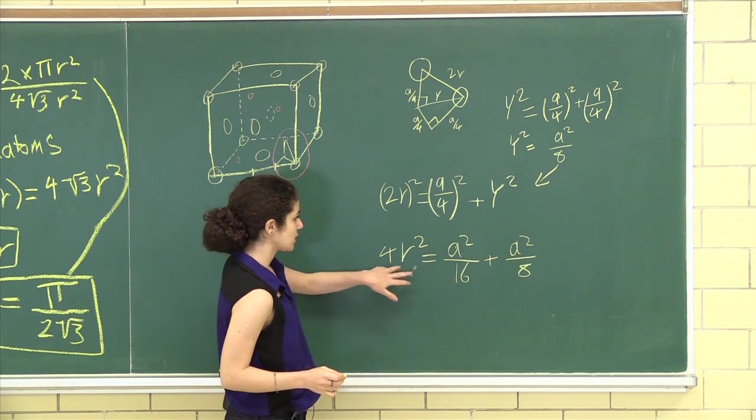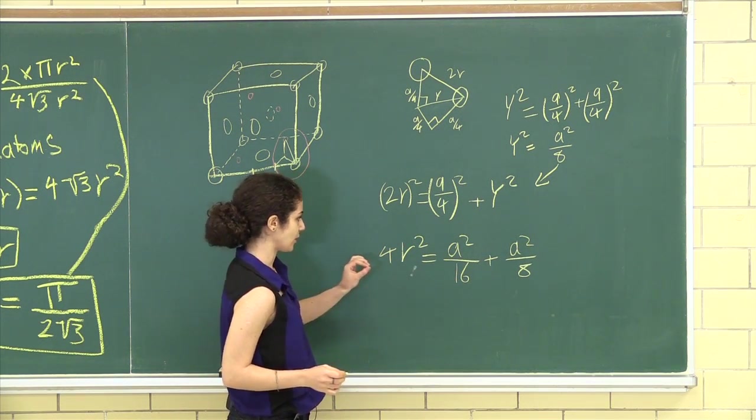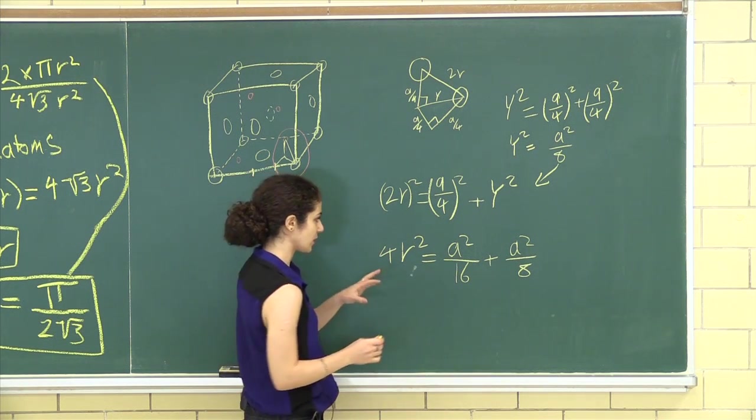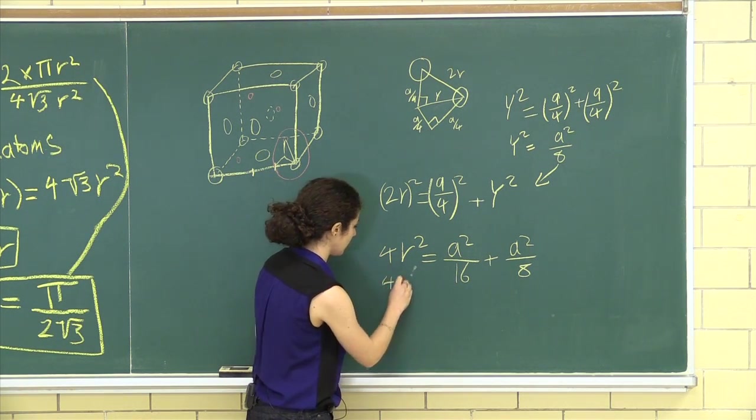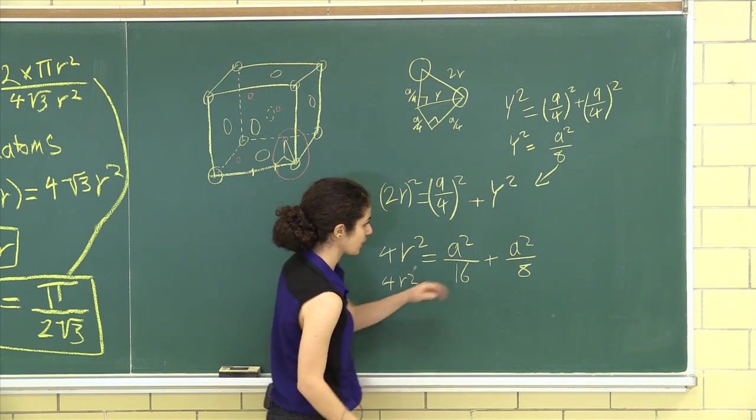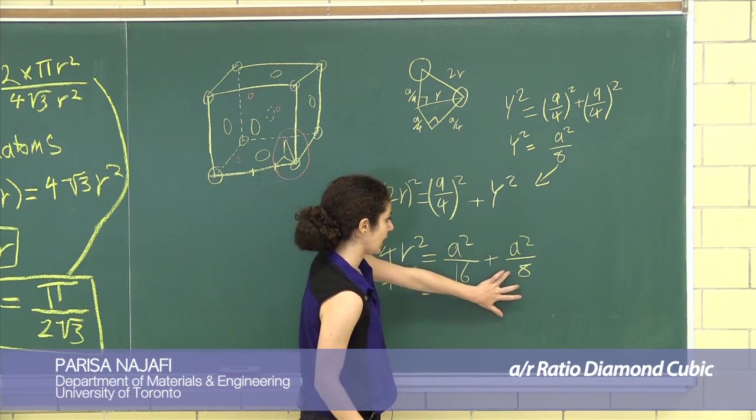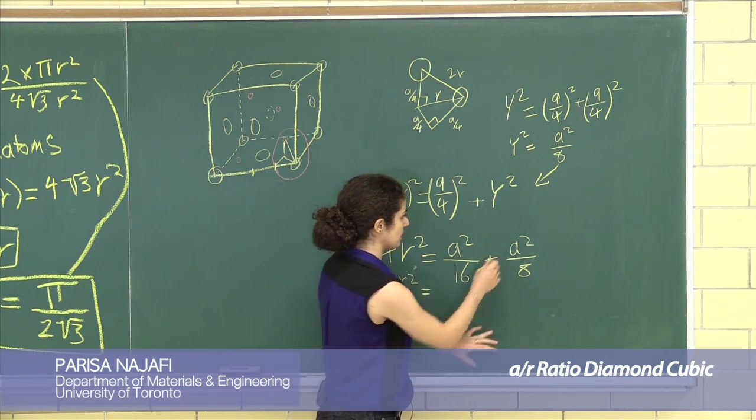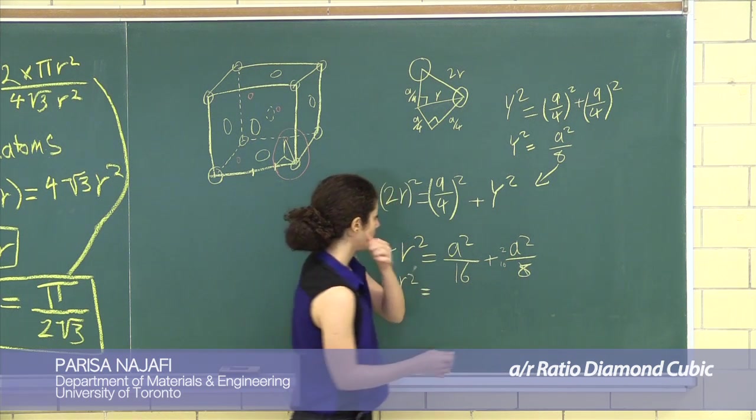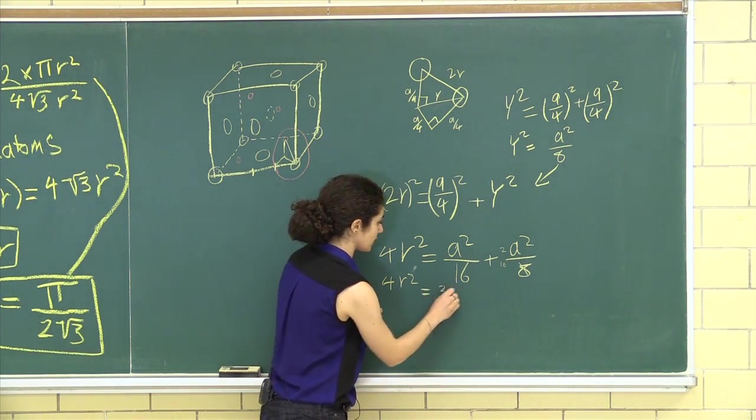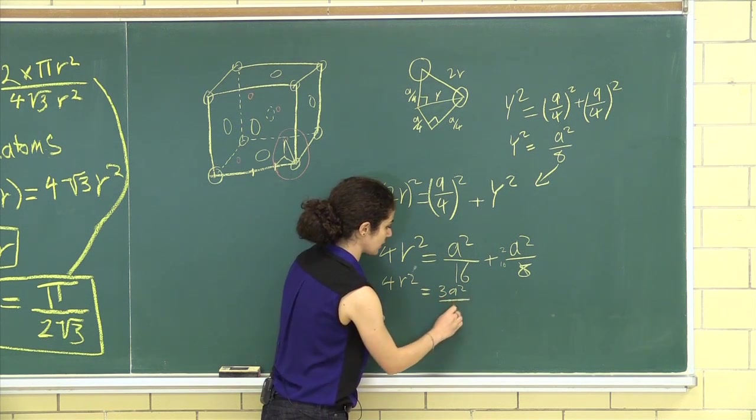Now we can solve for our a to r ratio. It takes a bit of crunching numbers, but we can do it. So 4r squared is equal to a squared over 8 is the same thing as 2a squared over 16, right? So that means we have 3a squared over 16.